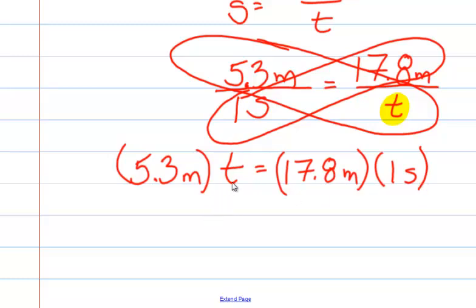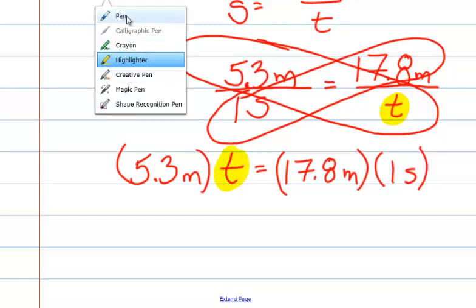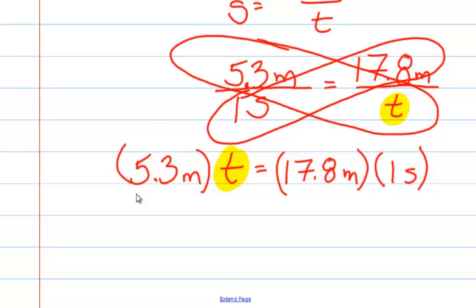We are trying to solve for t, remember. So how do we get t alone? In order to get t alone, we're going to have to divide. Whatever we do to one side of the equation, we have to do to the other side. So to get t alone on this side, the opposite of multiplication, which is 5.3 meters times t, the opposite of multiplication is division.